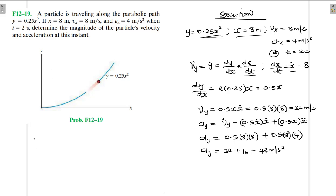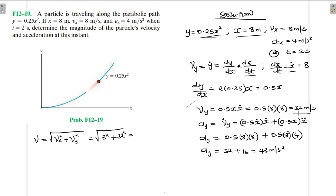The magnitude of the velocity is v = √(vx² + vy²) = √(8² + 32²) = √(64 + 1024) = √1088, which gives us 32.98 meters per second.